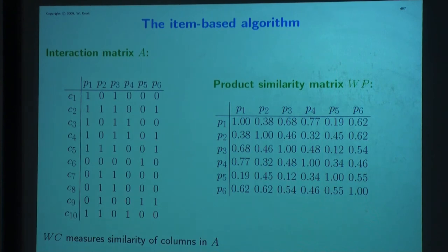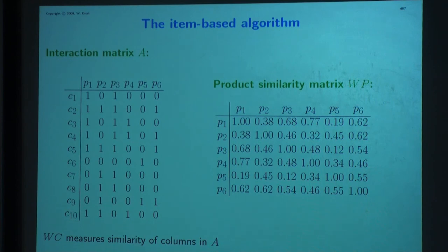Now I'll show you a different algorithm: the link analysis algorithm. In this algorithm we also use something like a similarity matrix, but we don't have to specify it — this matrix evolves. We start with some initial values and then it dynamically evolves during the iteration process. That's of course a nice feature.